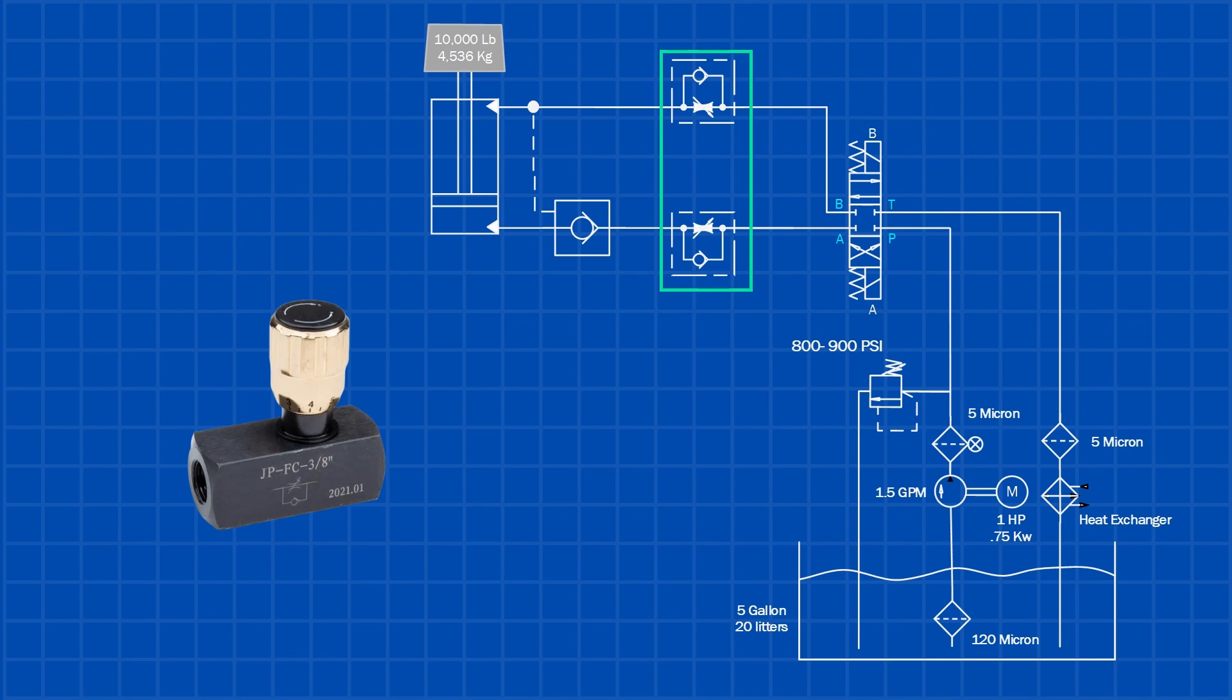As the cylinder retracts, fluid from the blind side drains to the tank, and the weight of the load can cause it to freefall. Proper flow control slows it down safely. For an overhung load, a flow control valve alone wouldn't be enough. We'd need a counterbalance valve instead. But for this system, flow control gets the job done.